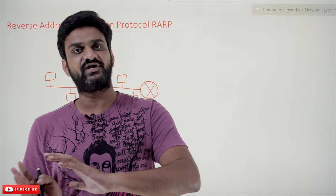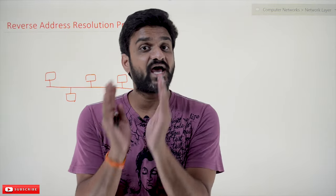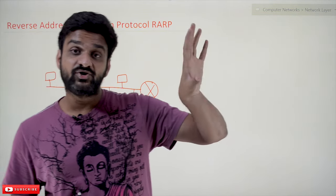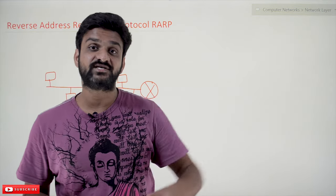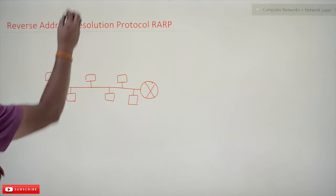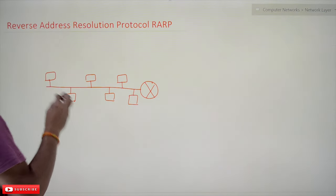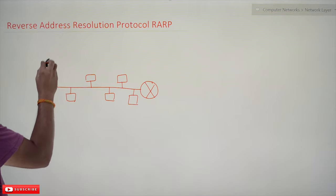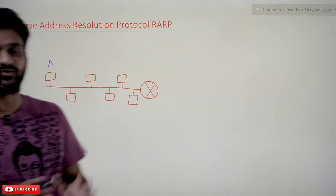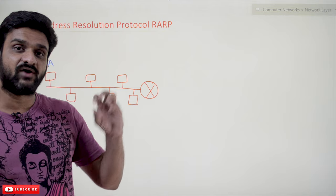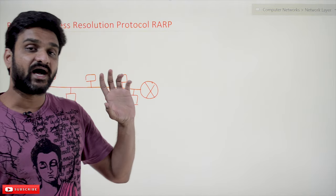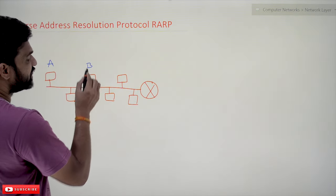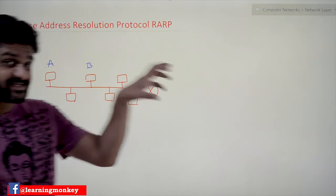Have you seen networks where systems do not have hard disks? For example, take engineering college networks. The best example is: if you have gone to a computer lab, sat on a computer, and prepared a Word document stored on that computer — after some time, you go to the lab again, sit on a different system, and you can still access your content.